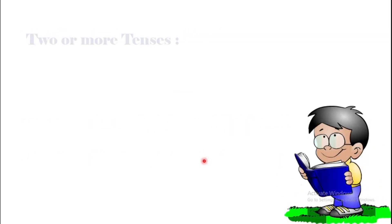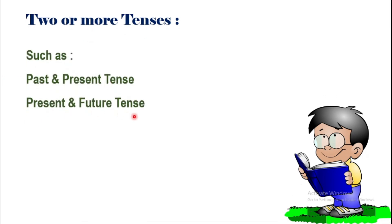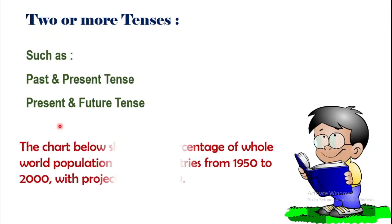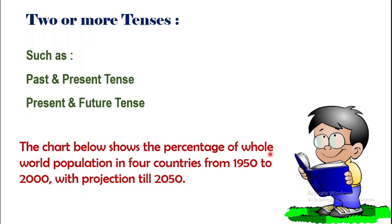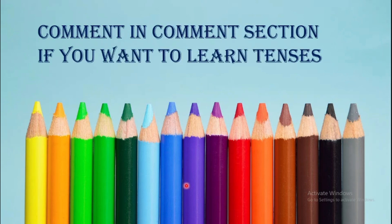Most tasks require you to compare data from two or more time periods, such as past and present, or present and future predictions. In that case, the test taker has to use a range of different tenses. For instance: 'The chart below shows the percentage of world population in four countries from 1950 to 2000, with projection till 2050.' Both past and future years are used, so you will have to use both tenses. But remember — never use different tenses just to show that you know several tenses. Only use the tense that is 100% correct for expressing a specific piece of information.